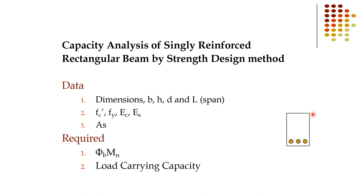In a singly reinforced beam, concrete at the top provides the compressive force and steel at the bottom provides the tensile force. If the compressive capacity is insufficient, we enhance it by adding steel bars at the top as well — that section is called a doubly reinforced beam. In a doubly reinforced beam, both top and bottom bars contribute to internal resistance. Doubly reinforced beams will be discussed in detail in upcoming lectures.